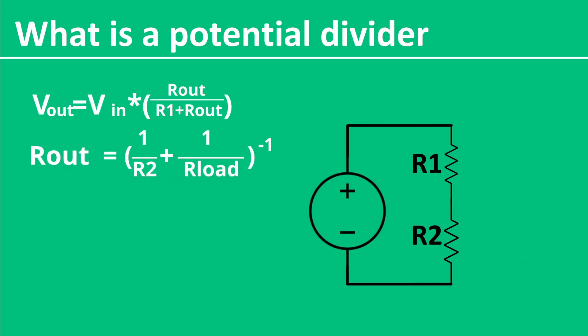If we substitute this into our voltage divider formula, you can see now that the output voltage is now dependent not only on R2, but also on the resistance of the load as well.